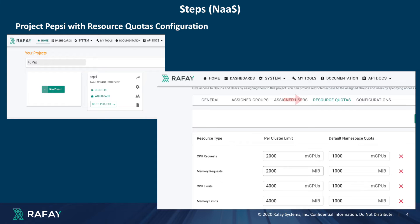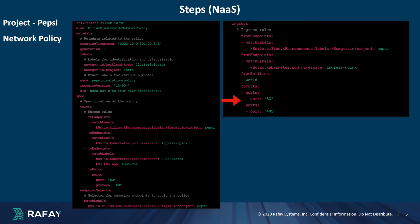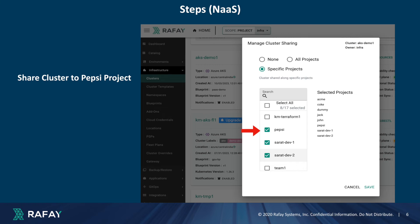Next, create a Pepsi project, configure the project quotas, and deploy the namespace isolation network policy. This policy specifically permits inbound network connections to ports 443 and 80, while restricting outbound access to all other namespaces. Then, share the cluster from the infra project to the Pepsi project.